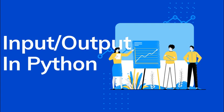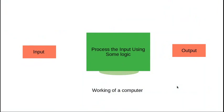Hello everyone, this is Usual2tex here. In today's video I will be discussing input and output operations in Python. In Python, whatever we write in the program and the data that we give to the Python program is the input. The computer processes that input using some logic and then gives some output. We have the input-process-output cycle, which in shorthand notation we call the IPO cycle. This is how a computer processes a typical program involving input and output.